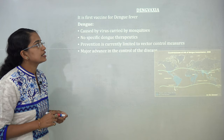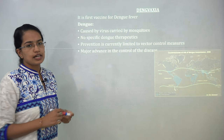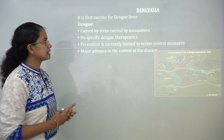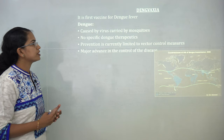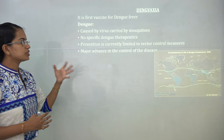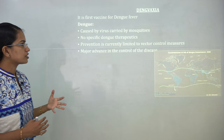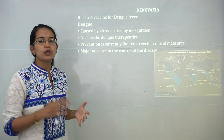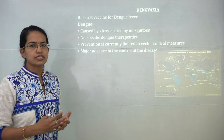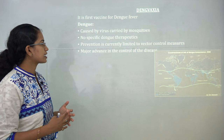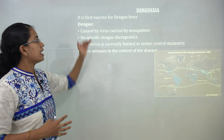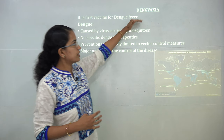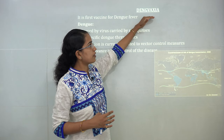The next is Dengvaxia, the first-ever vaccine for dengue fever. Dengue is caused by a mosquito and until now there was no prevention or cure; Dengvaxia is the first vaccine developed against it.